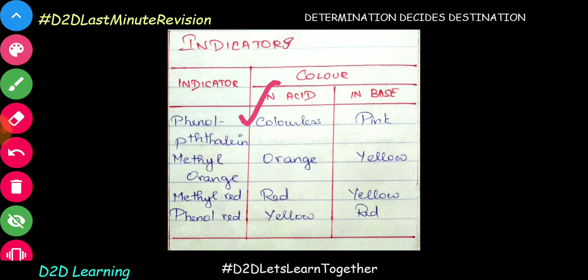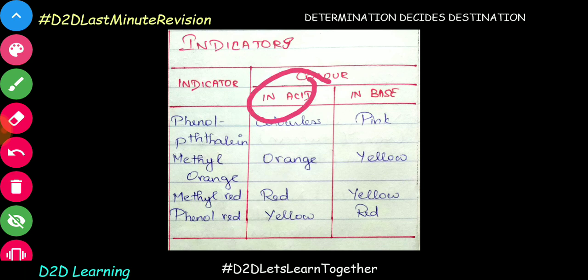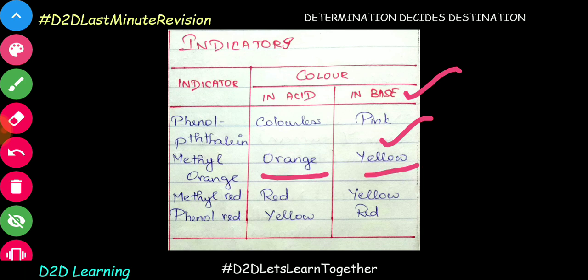So the four indicators are: Phenolphthalein, Methyl Orange, Methyl Red, and Phenol Red. For Phenolphthalein: in acid it is colorless, in base it is pink. For Methyl Orange: in acid it is orange, in base it is yellow. For Methyl Red: in acid it is red, in base it is yellow. For Phenol Red: in acid it is yellow, in base it is red.